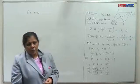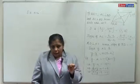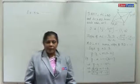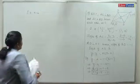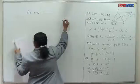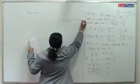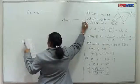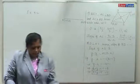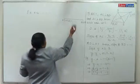P divides the segment joining A and B in the ratio 2:3 internally. A has coordinates (-2, 6) and B has coordinates (3, -4). We need to find P using the section formula, then write the equation of the line.